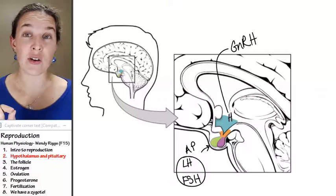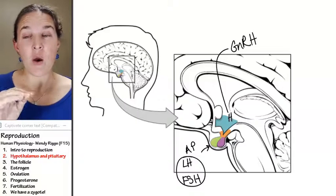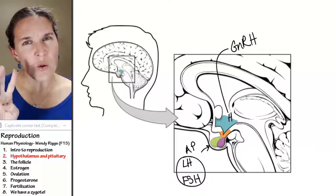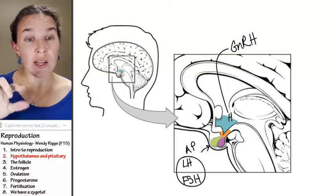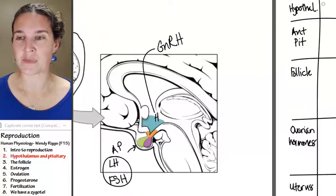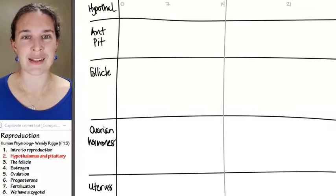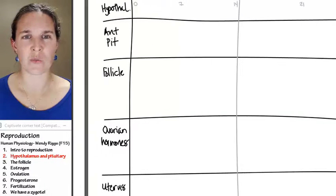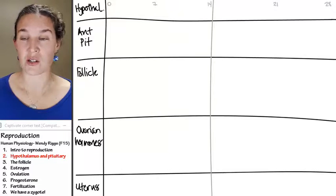Now, we're going to start out by looking at what happens with these three hormones during one complete menstrual cycle. So let's go back to that crazy chart that I've got going on. Let's orient ourselves to the crazy chart.